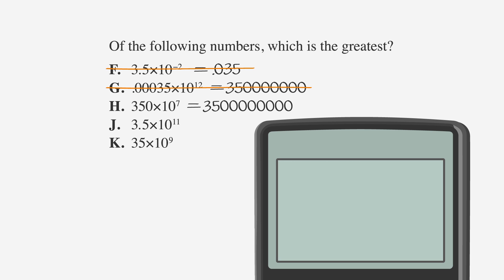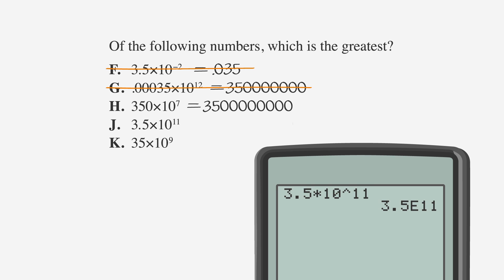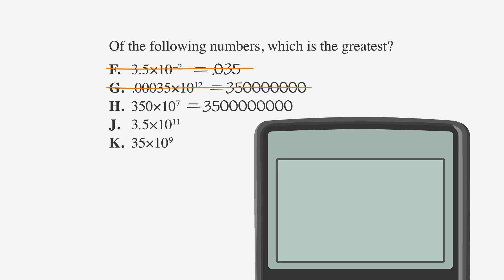Choice J is 3.5 times 10 to the 11th. In the calculator, you'll enter 3.5 times 10 to the 11th. You'll get 3.5e11. Our clue that this number is bigger than answer H is that the calculator can't actually fit all the zeros onto the screen. Instead, it displays the answer in scientific notation. If you did write it out, you'd get 35 with 10 zeros after it. But for the sake of time, you can determine it's bigger than H and therefore cross out H. Write 3.5e11 next to answer choice J.